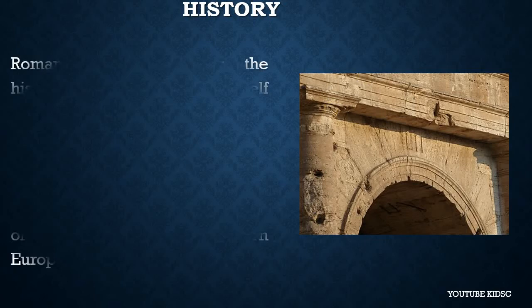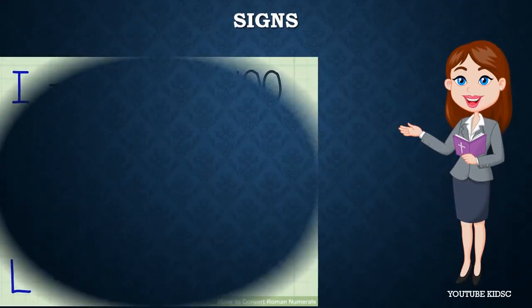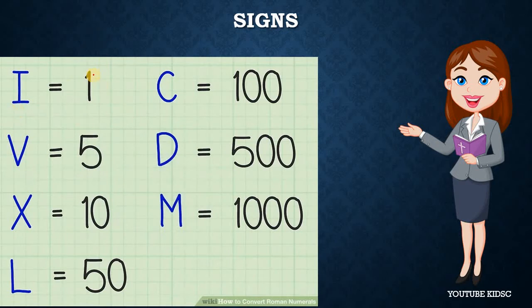Now let's see the history of Roman numerals. Roman numerals follow the history of ancient Rome itself, from its early stages on the Latin Palatine Hill in the 8th and 9th century BC, which fell in the 2nd century AD from civil war, plague, civil apathy, and the rise of Christianity. This tells us that Roman numerals were written from ancient Rome.